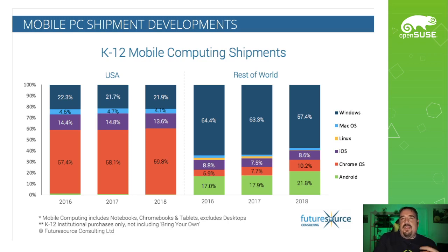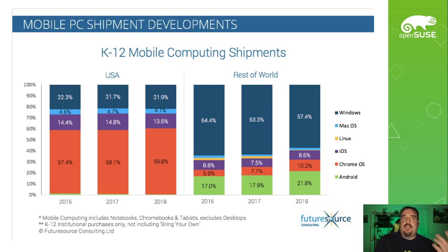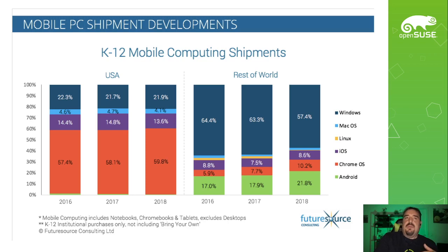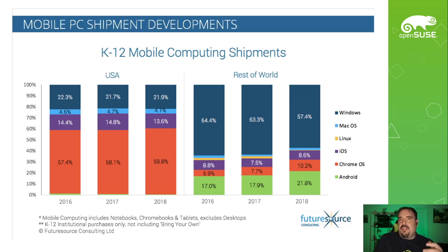On the desktop side too, you see trends like this — especially in the US, where in education, like 60% of students now are not learning on a traditional desktop. They're not learning on Mac. They're not learning on Windows. They're learning on a Chromebook. That Chromebook market is growing very quickly and the Windows market is shrinking — and that Windows market is not shrinking at the expense of Linux. It's iOS, Chrome, and Android that are growing in that education market.